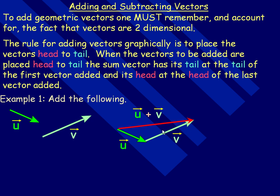This method can be used to add more than two vectors — you could have three, four, five, or however many. You just keep placing them head to tail, and then the sum vector goes from the tail of the first vector to the head of the last one.